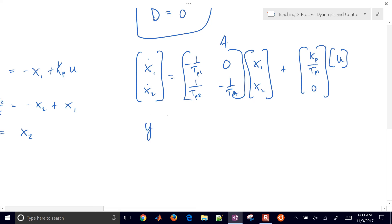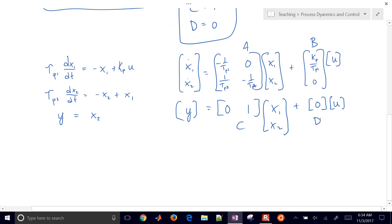And let me go ahead and, there's my Y equals, and then I have my C matrix, and that's multiplied by X1 and X2. So this one's just Y equals X2 plus zero times U. So here's A, B, C, and D matrices. I've put this one into this state space form.